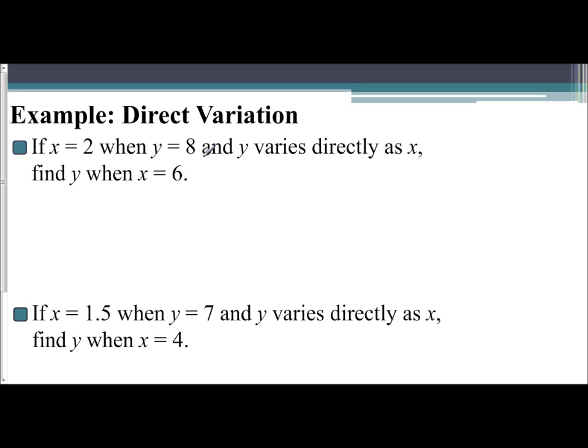When you're given this scenario, you need to look at it as two separate parts. The first part says that if x equals 2, when y equals 8, and y varies directly as x. So the first part of this example gives you the information you need to find k.